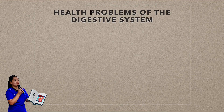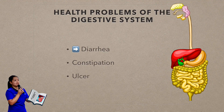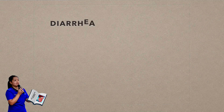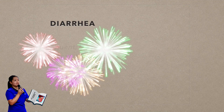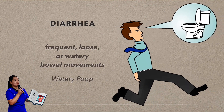Here are some examples of the health problems of the digestive system: diarrhea, constipation, and ulcer. Diarrhea is characterized by loose, watery stools or a frequent need to have a bowel movement. It usually lasts a few days and often disappears without any treatment. Diarrhea can be acute or chronic. When we say chronic, it refers to diarrhea that lasts for at least four weeks.